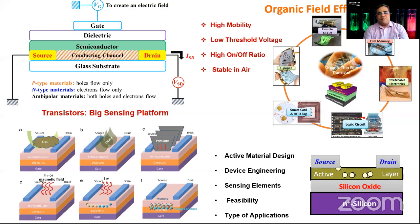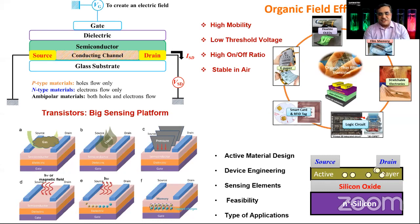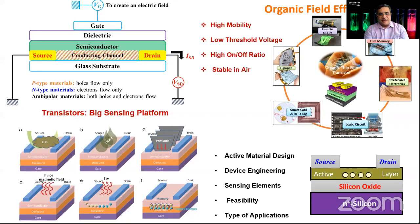There are different device geometries. Most of my work today is based on silicon-silicon dioxide, which is commercially available. We do a SAM — self-assembled monolayer — treatment, then deposit the organic semiconductor, and then put source-drain gold electrodes on top to complete the transistor fabrication and evaluate electrical performance. People can also use glass substrates with a top-gate, bottom-contact configuration, among other device geometries.